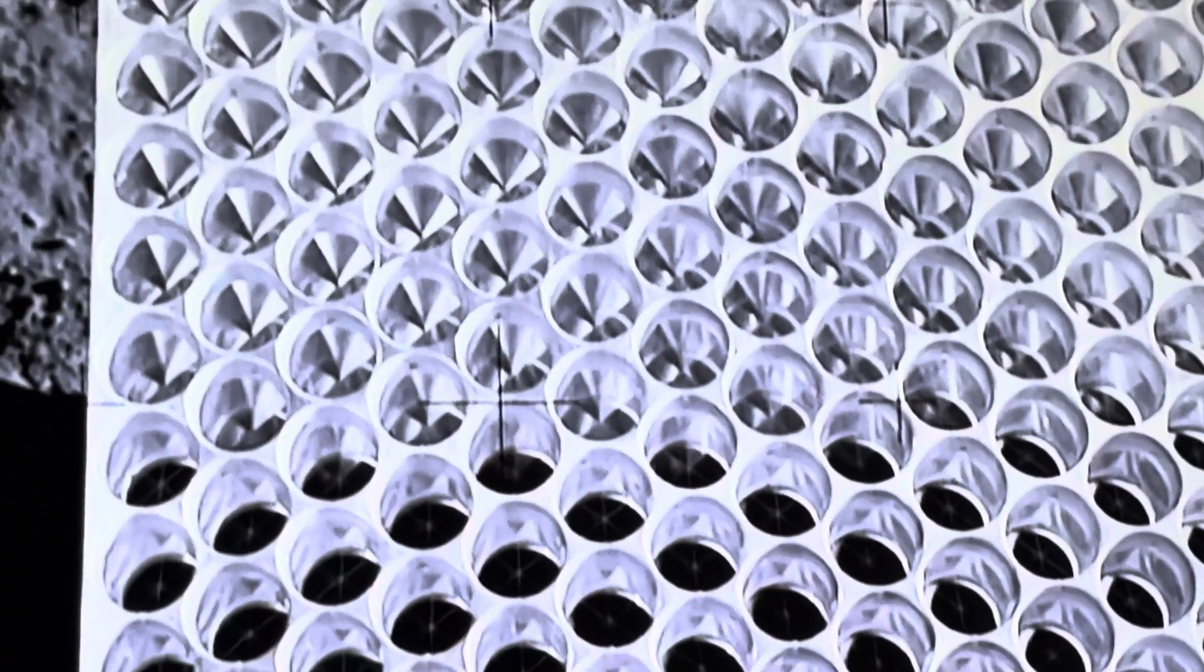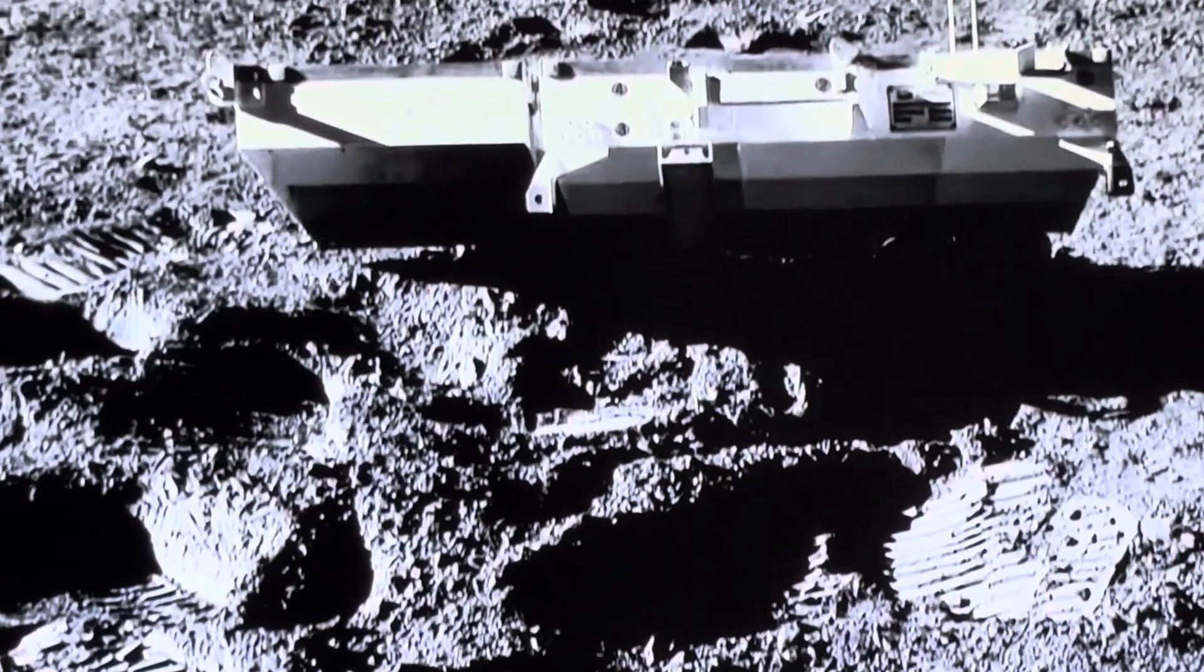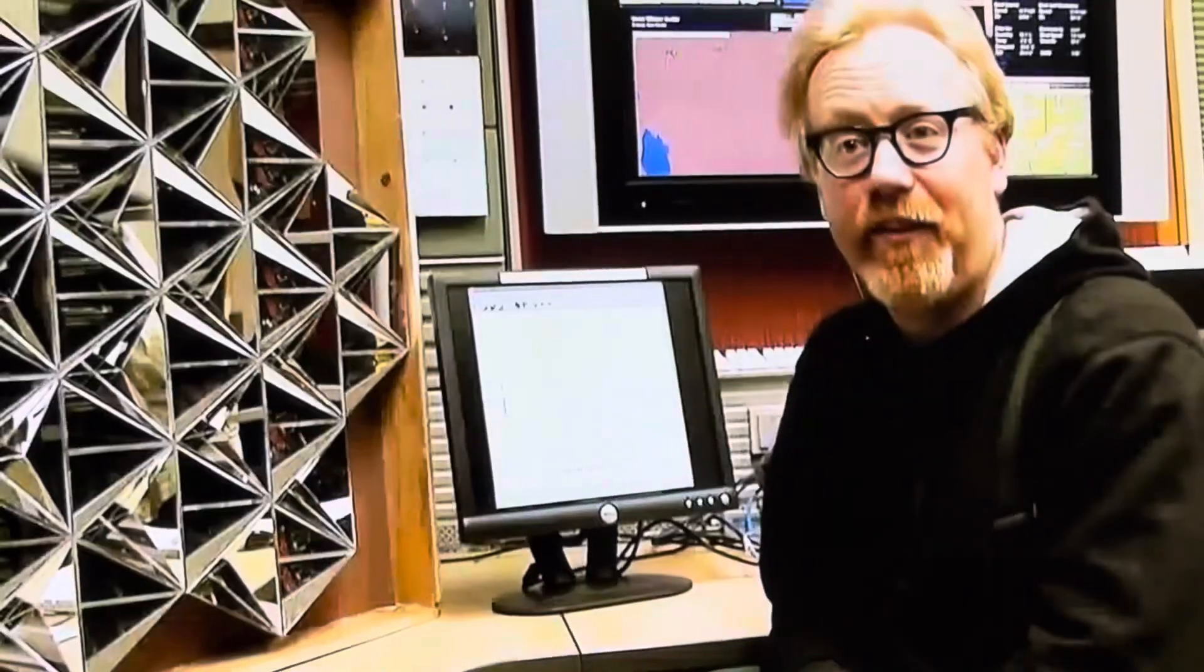Now we're firing on the order of 200 quadrillion photons per laser pulse at that reflector, and we're getting between one and three photons back per pulse if we're lucky. When we get that photon back, we'll see a spike like that on the screen.